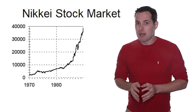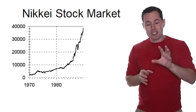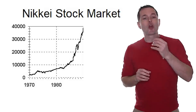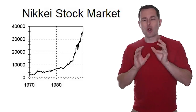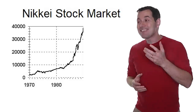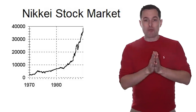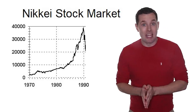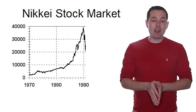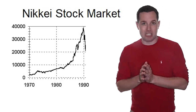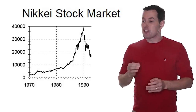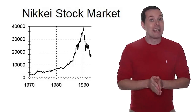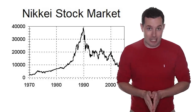Moving into 1990, prices of real estate began to show early warning signs. And in 1991, real estate prices began to collapse. At the same time, the Japanese stock market began to crash. And just like that, Japan entered what is known today as the lost decade.